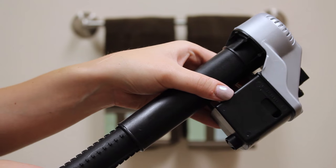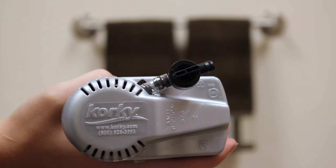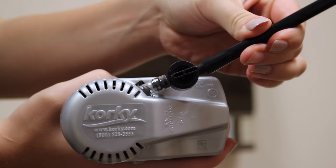Lock the fill valve in place by twisting the upper half clockwise. Make sure the ribs line up with the pegs and then attach the refill tube to your new fill valve.